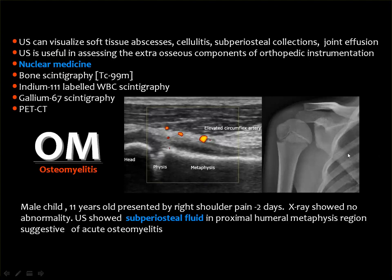In one case the shoulder X-ray showed no abnormality, but ultrasound demonstrated sub-periosteal fluid collection near the humeral metaphysis, which cannot be seen on plain X-ray. Ultrasound has a major role in musculoskeletal imaging. Bone scan, indium-labeled white cell scintigraphy, gallium citrate, and FDG-PET may help in localization of infection, but findings are non-specific as they may be secondary to trauma or other underlying pathologies.